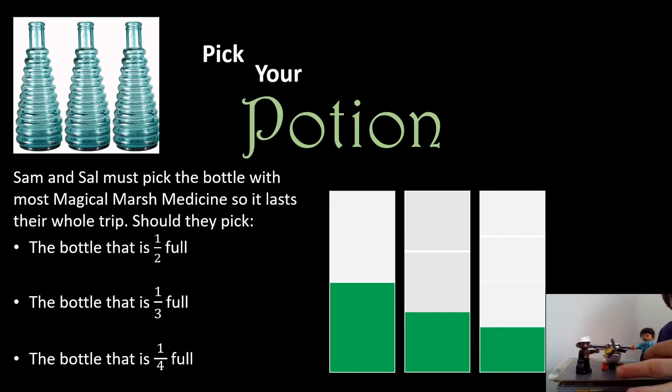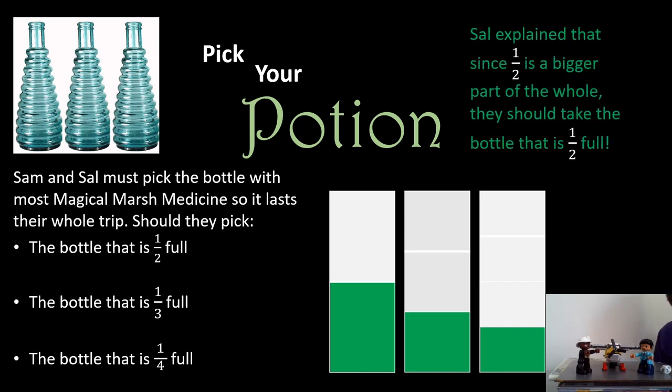Oh, that makes sense, Sal. So with that in mind, Sam, I think we should take the bottle that is one half full. It has the biggest part of the whole left inside of it. That will help us get through this mathematics marsh. I'm so glad you're here with me, Sal. You really helped me reason through what fraction was bigger just by thinking about the denominator and which is the bigger part of the whole. Thank you, Sal. All right, let's move on. Whew, I'm getting tired. I'm real tired, Sal. Me too, Sam. I wonder, are we there yet? What do you see over there? What's that piece of paper sticking out of that tree? I think it's a map. Let's go get the map.